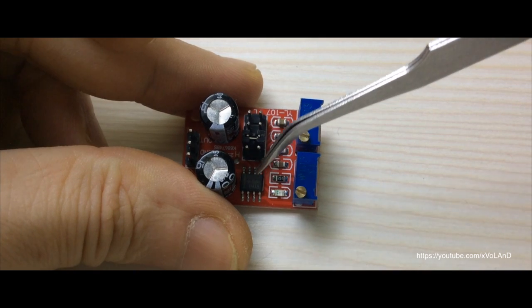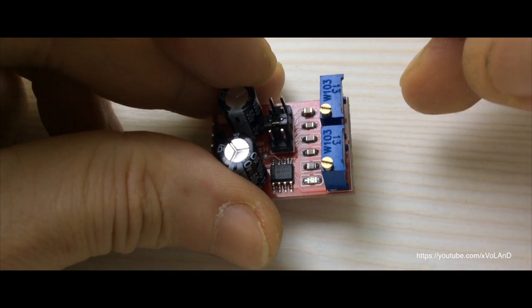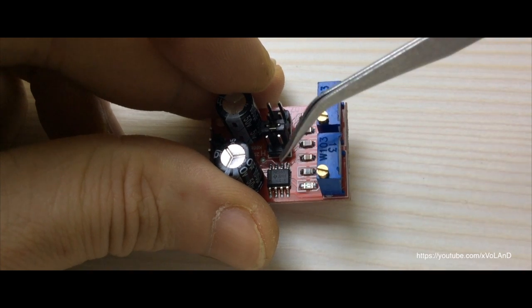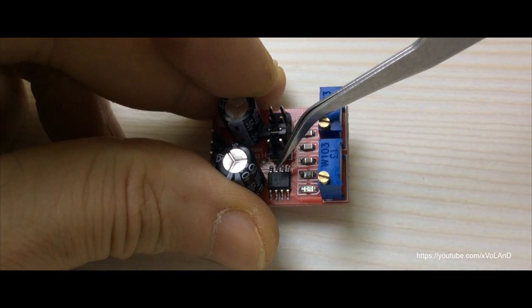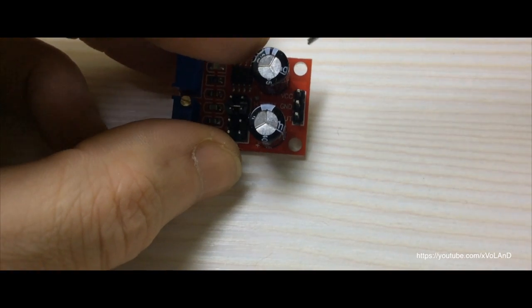B-Stable operates as a flip-flop, Mono-Stable as a one-shot pulse generator, and A-Stable free-running mode operates as an electronic oscillator.